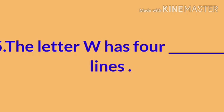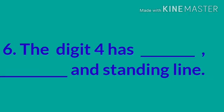Next number 5: The letter W has 4 dash lines. You observe the letter W and write what is the line it is having, 4 dash lines. Number 6: The digit 4 has dash, dash and standing line. So you have to write the name of the line.